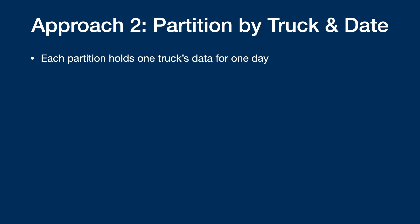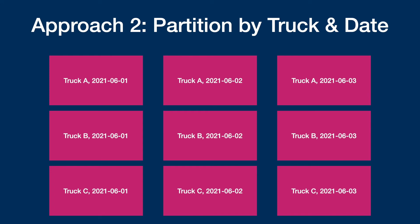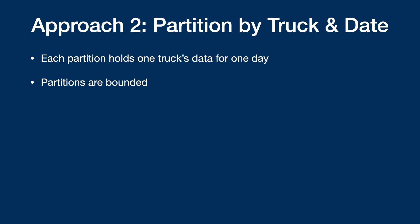Each partition holds one truck's data for one day. If you have five days for the same truck, you'll have five partitions. The partitions are now bounded because you have one truck's worth of data for one day. Once that day is over, for the next day we create a new partition, so you know exactly when a partition is going to stop being written to.